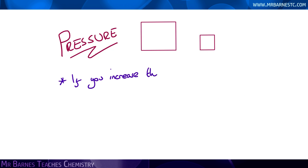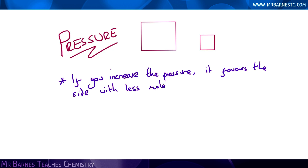Moving on to pressure. If you increase the pressure of a reaction, it will always favour the side with fewer molecules. The reason being, the more molecules you have under pressure, they'll bump into each other, collide and react more — therefore there's more chance of them turning into the products.